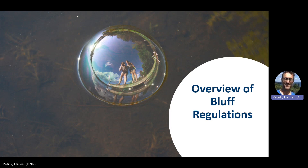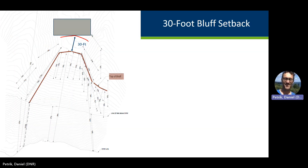Now let's look at the specific regulations that apply on and around bluffs. The key bluff regulation that addresses all of these purposes is the requirement that structures, as well as roads, parking areas, and driveways, be set back from the top of a bluff by 30 feet. On the screen is what a typical survey might look like where a bluff has been delineated by a professional surveyor. Using the bluff and top of bluff definitions, the surveyor has identified the top of bluff. From the top of bluff line, one can then measure 30 feet in the direction of desired building area and identify the structure setback. Here is where the structure can be built.